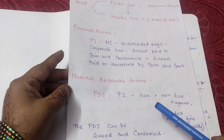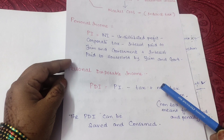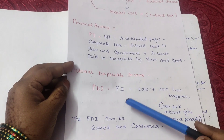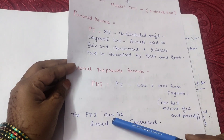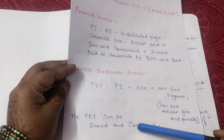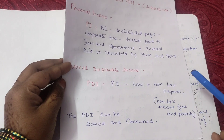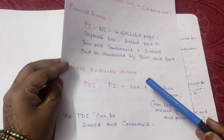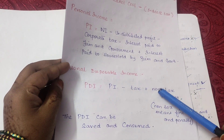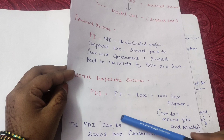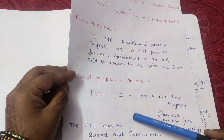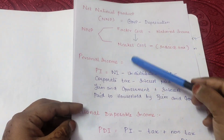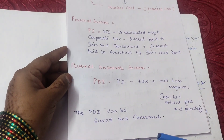Personal Disposable Income (PDI) = Personal Income − Tax − Non-tax payments. Non-tax payments refer to any kind of fine or penalty. After removing tax and non-tax payments, the remaining money is Personal Disposable Income, which can be saved or consumed.